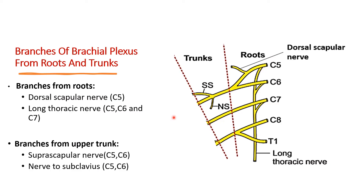In total there are 17 branches or nerves arising from the brachial plexus: 2 arise directly from the roots, 2 from the upper trunk, and 13 from the cords.